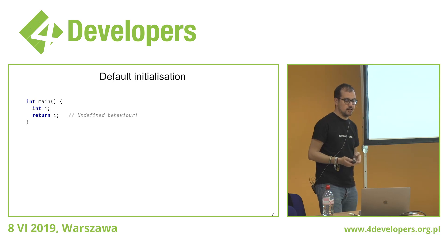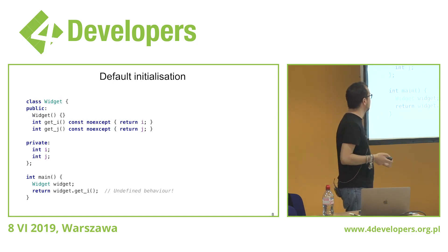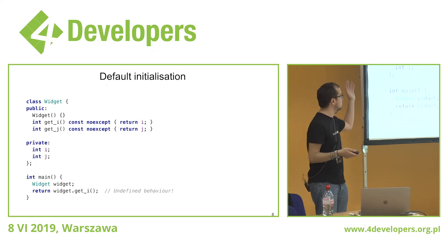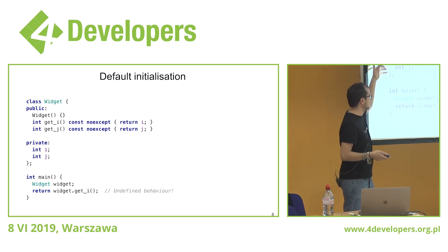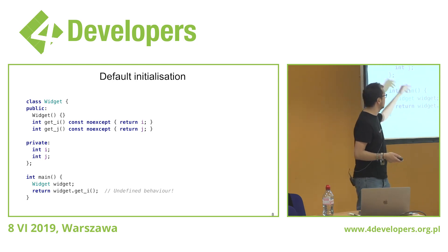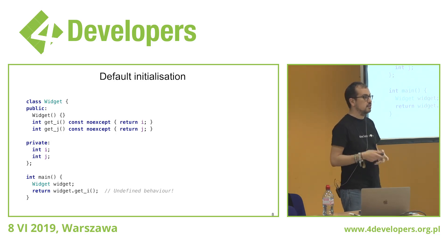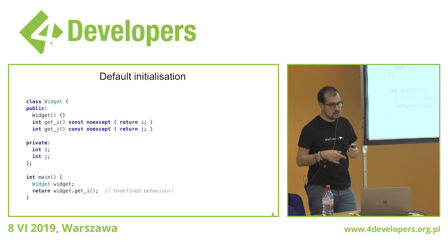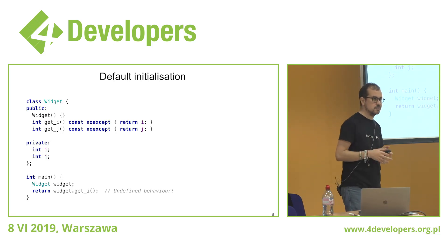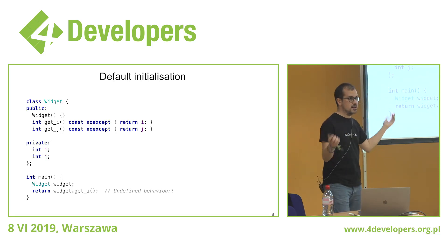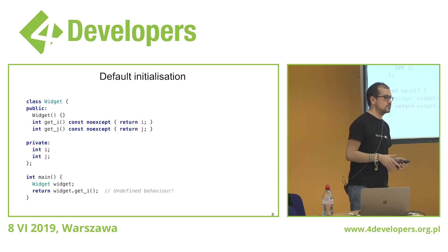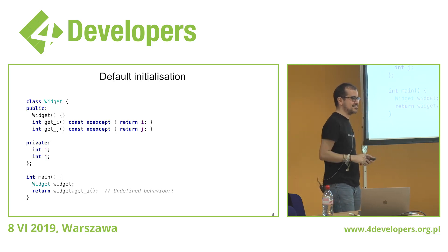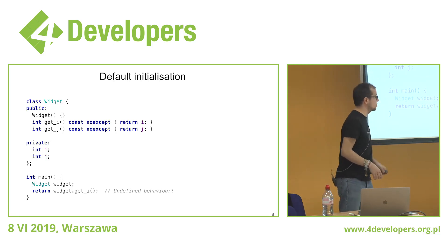You cannot access an uninitialized variable — that's not allowed. This is also true if you have a class. If you have a class widget with some member variables which are not initialized, accessing those member variables is also undefined behavior. When I started my career as a C++ developer, for the first couple of years I did not know this. I thought: classes are fancy, they have constructors, surely this is initialized to zeros. No, it does not. So I'm sure I introduced a few bugs in production code because I did not know that this is undefined behavior if you don't initialize your members.